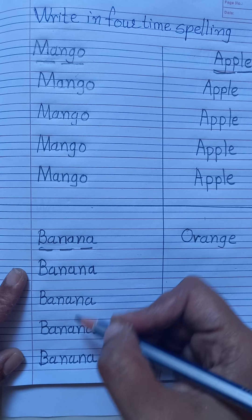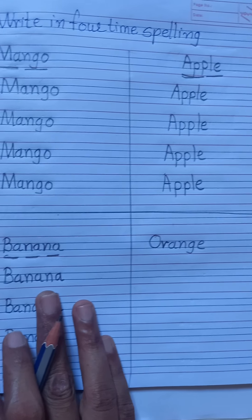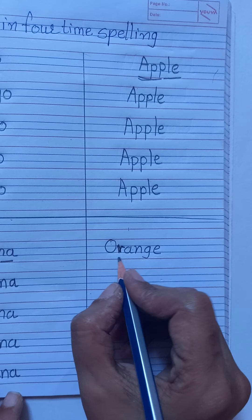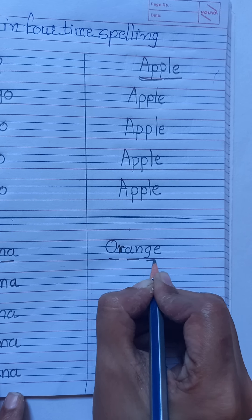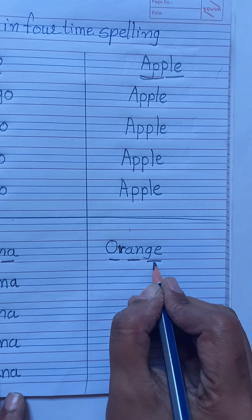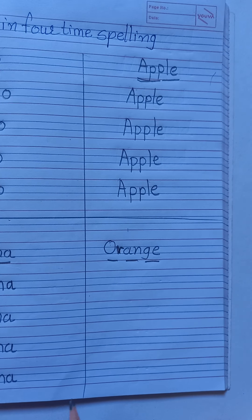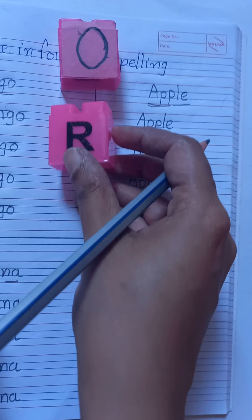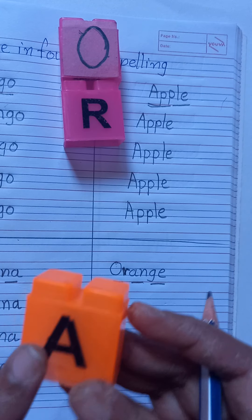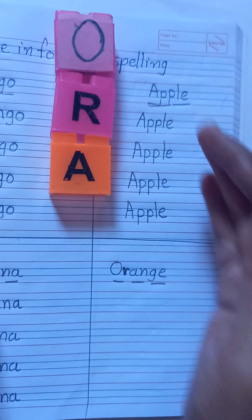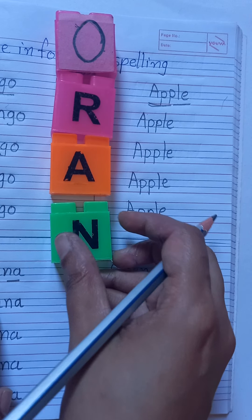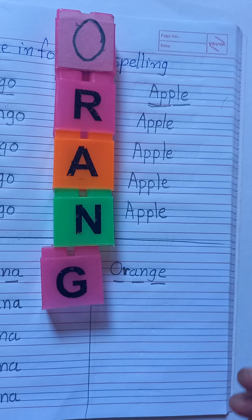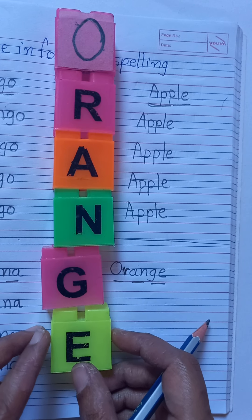Banana, okay. And next spelling: Orange. O-R-A-N-G-E, Orange. O-R-A-N-G-E, Orange. Okay students, which letter is this? O. Which letter is this? R. Which letter is this? A. N. G. And E.